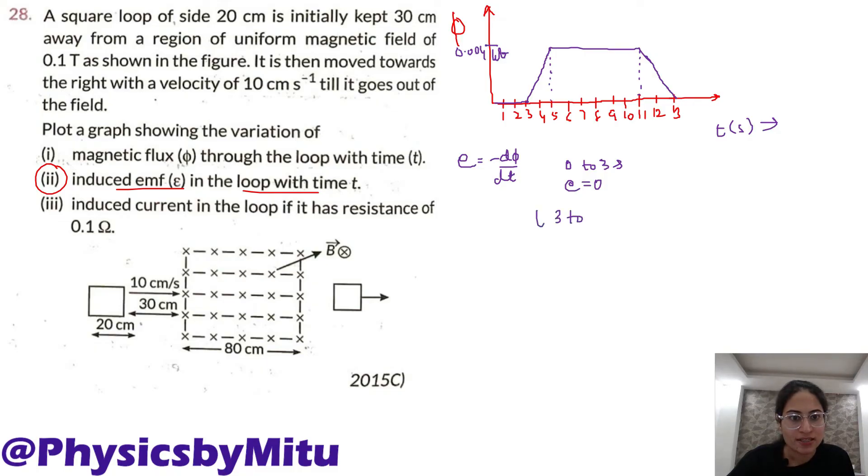3 to 5 seconds, E is what is the slope of the graph, dΦ by dt. What is the change in flux? Minus 0.004 minus 0 upon time taken 2 seconds. So minus 0.002 volt or we can say minus 2 millivolt. From time 5 to 11 seconds, EMF will be 0 because dΦ by dt is 0. No flux change.